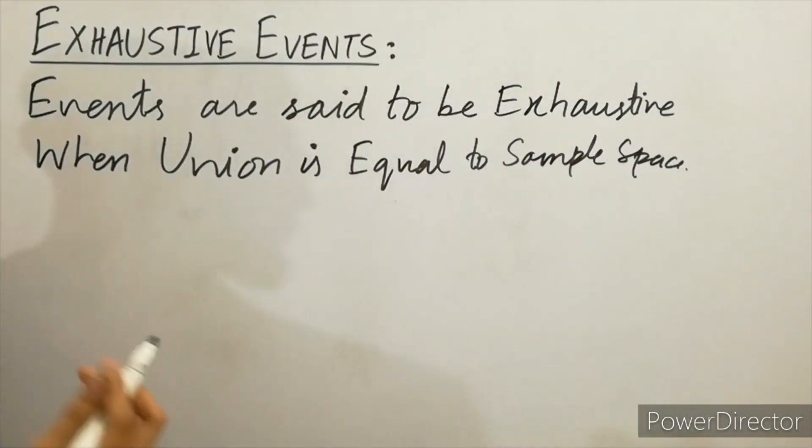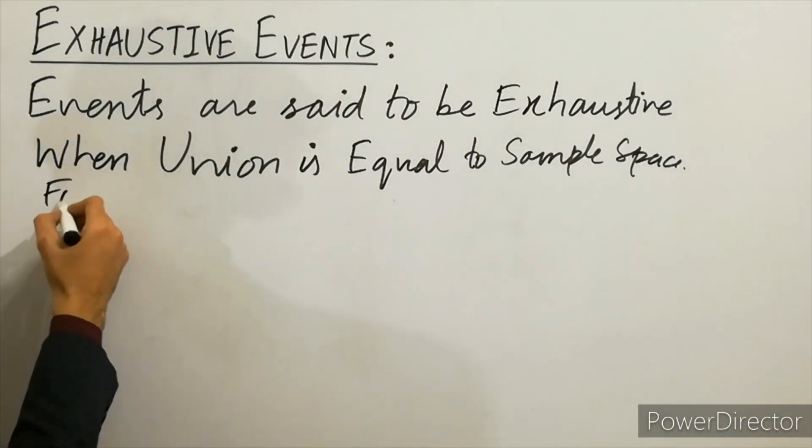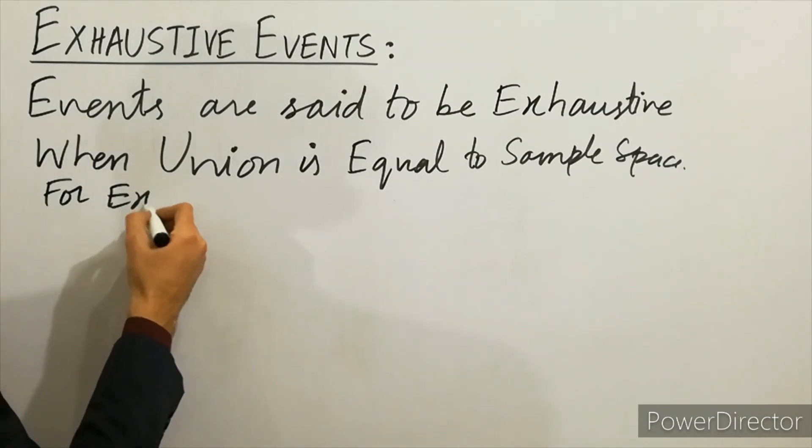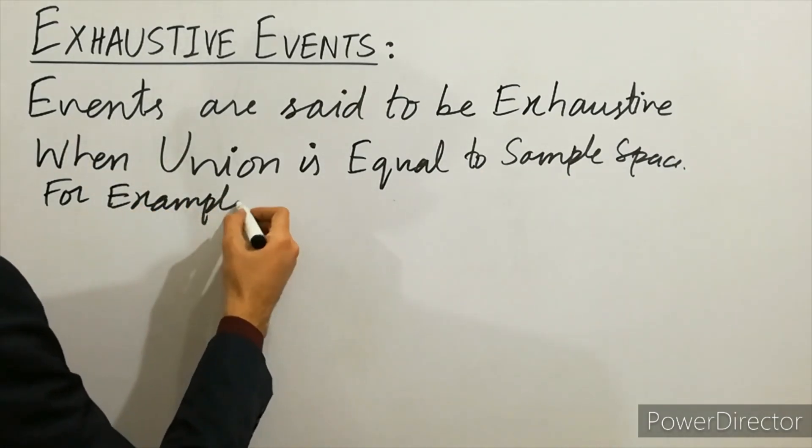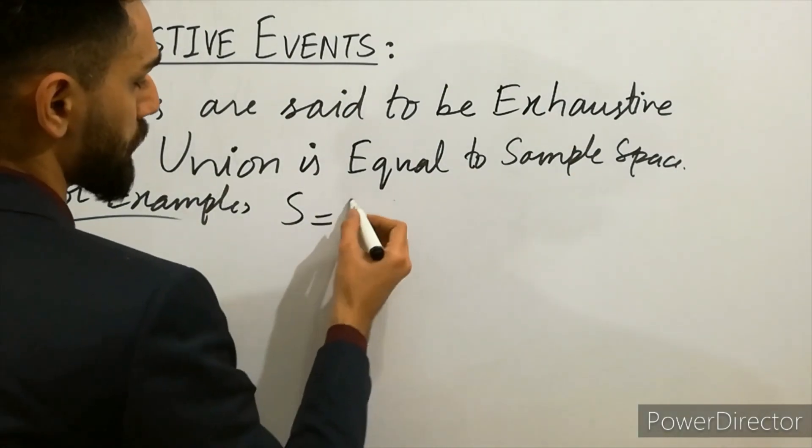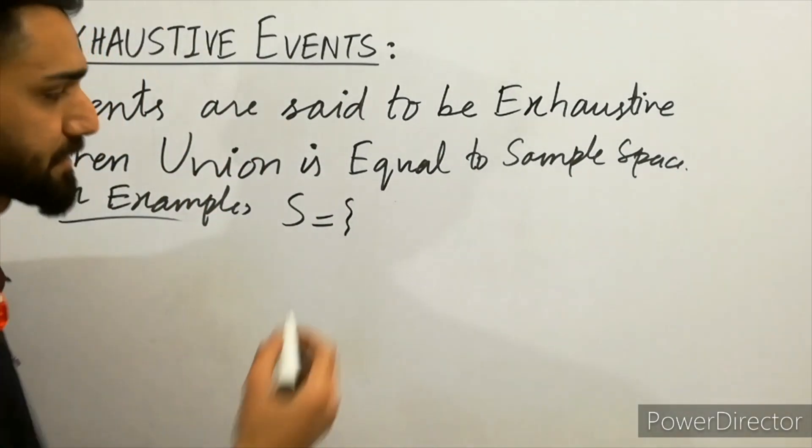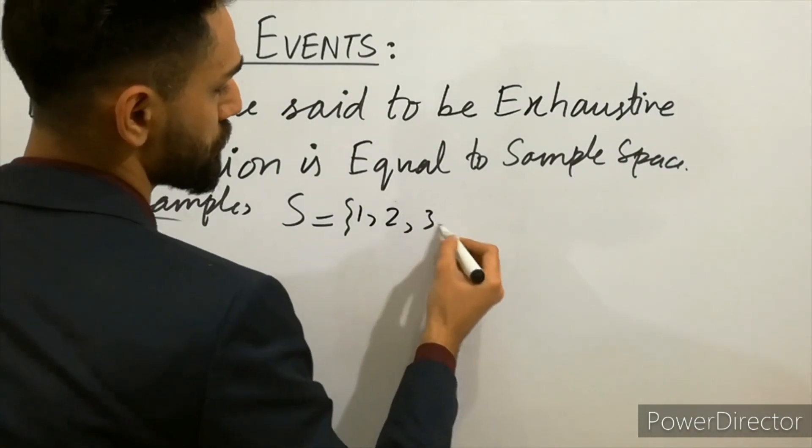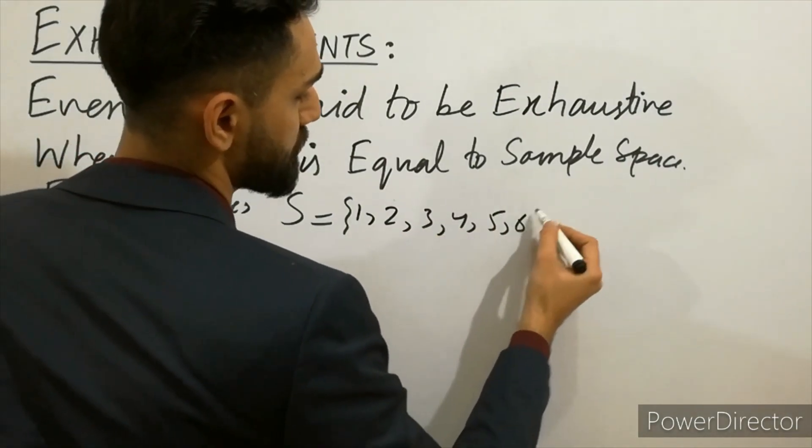For example, I take a short example. You can write here sample space for one dice: S = {1, 2, 3, 4, 5, 6}.